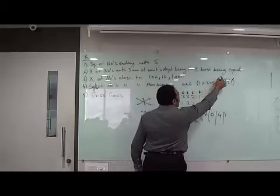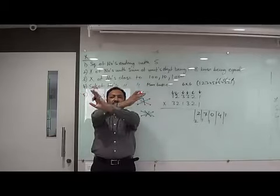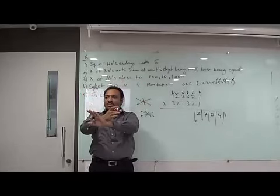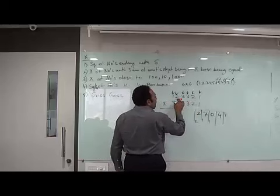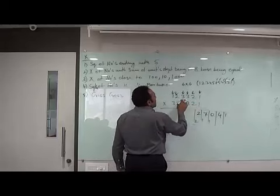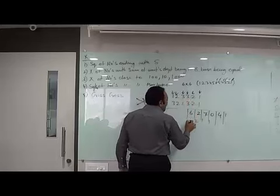Then I take all 6 columns. Extreme cross, next extreme cross, next extreme cross. 1 ones are 1, plus 3, 4, plus 4, 8, plus 4, 12, plus 9, 21, plus 3, 24, plus 2, 26. 6, 2 carry forward.